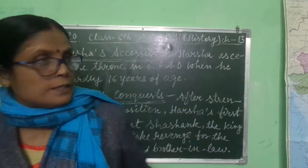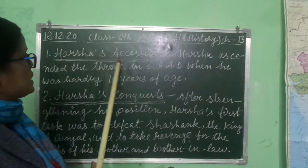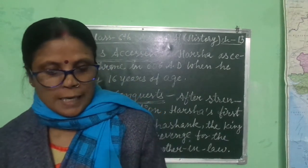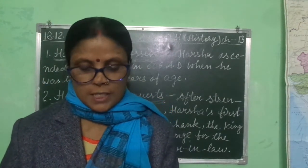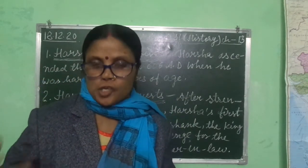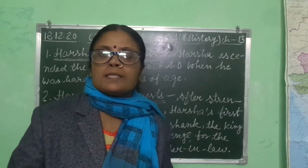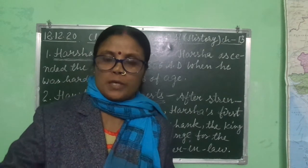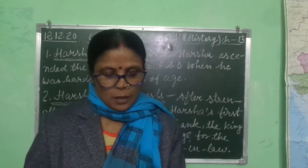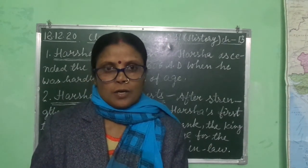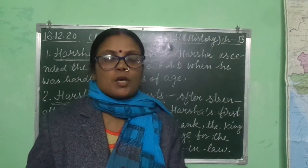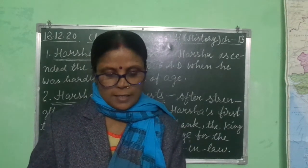Now our first topic: Harsha's Accession. Harsha ascended the throne in 606 AD when he was hardly 16 years of age — sola saal ki umr mein hi unhone Rajgaddi par baithkar apna avishek karaya. It was a very hard time for him, as the rulers of Gaur, Bengal, Vallabhi (Gujarat), had treacherously murdered his brother-in-law Graha Varman, the ruler of Kanyoj.